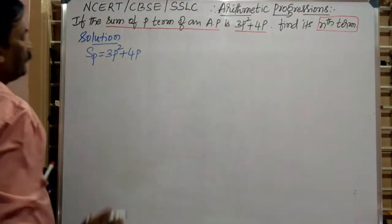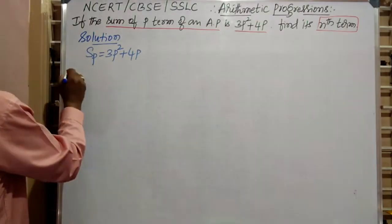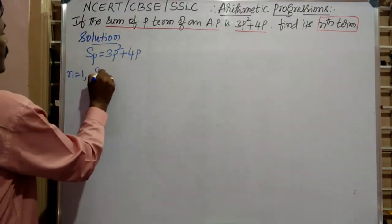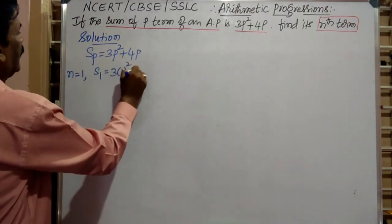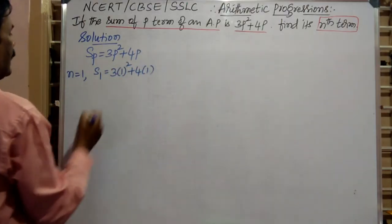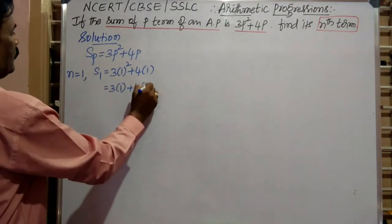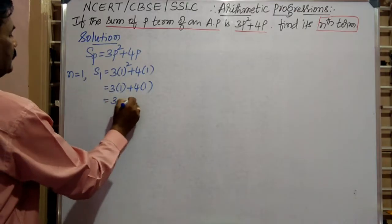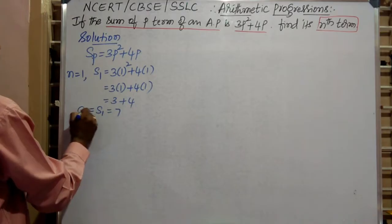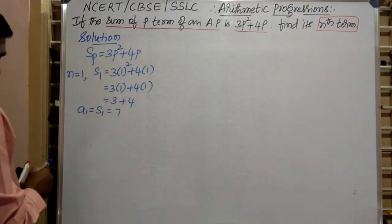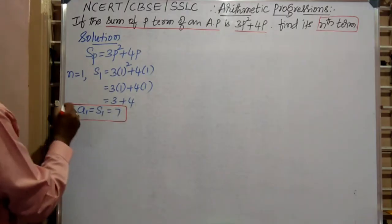Now we have to find the first term, or the sum of the first term — both are the same. So if N is equal to 1, S1 is equal to 3 into 1 squared plus 4 into 1. That is equal to 3 into 1 plus 4 into 1, that is 3 plus 4, that is equal to 7. So S1 is nothing but a1; the sum of the first term is nothing but the first term.